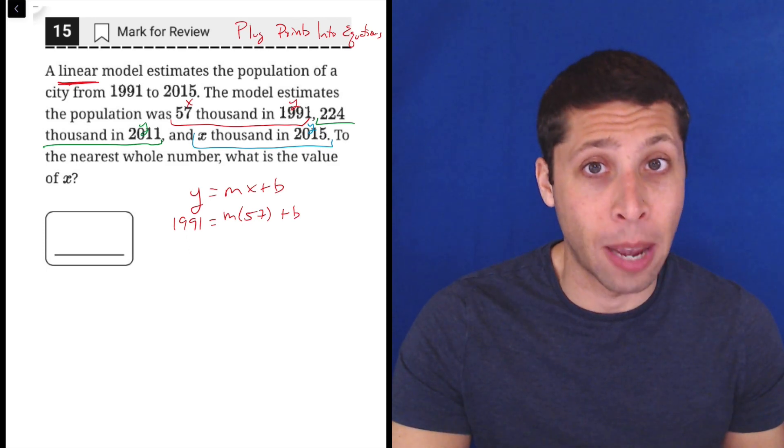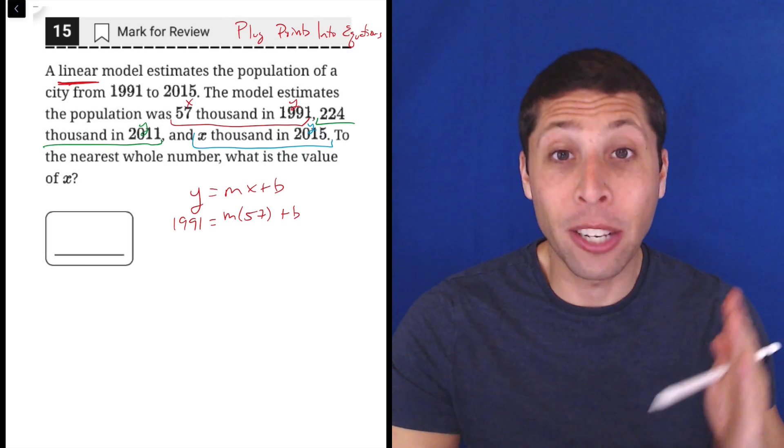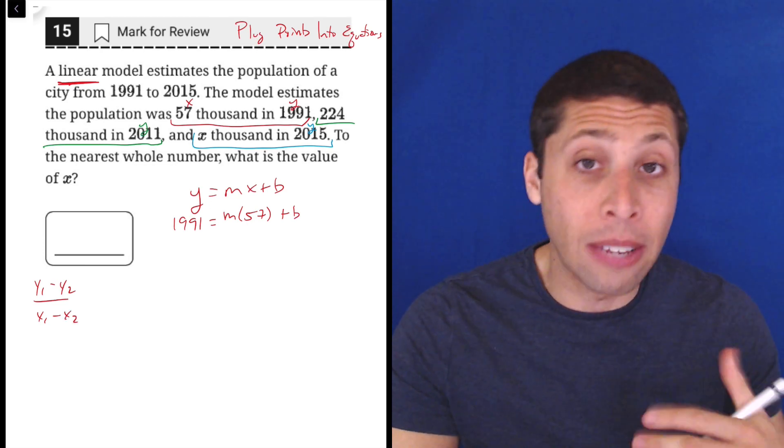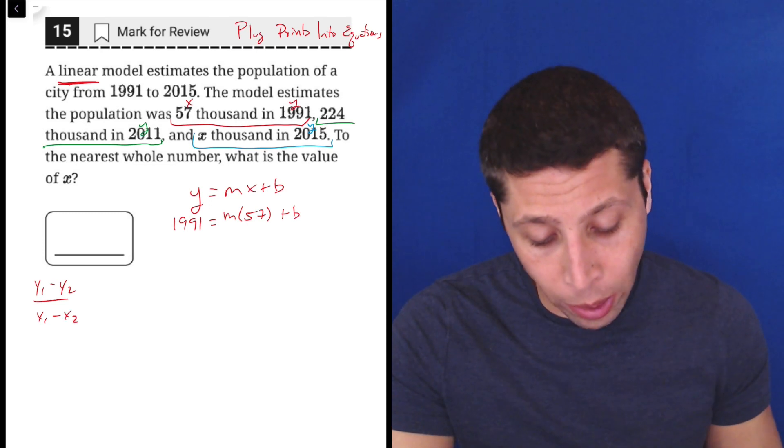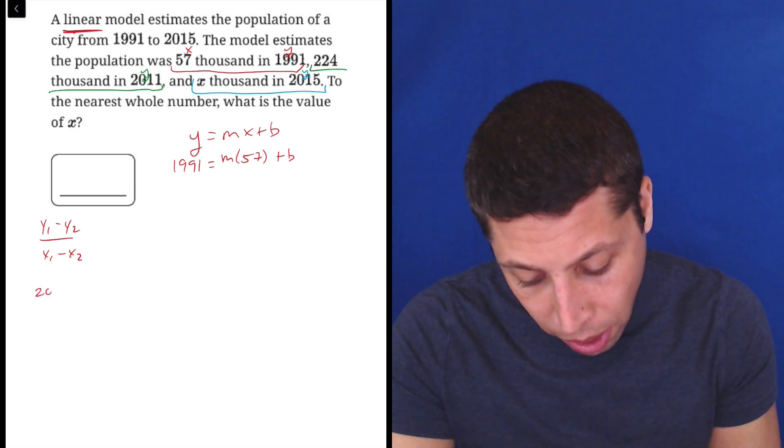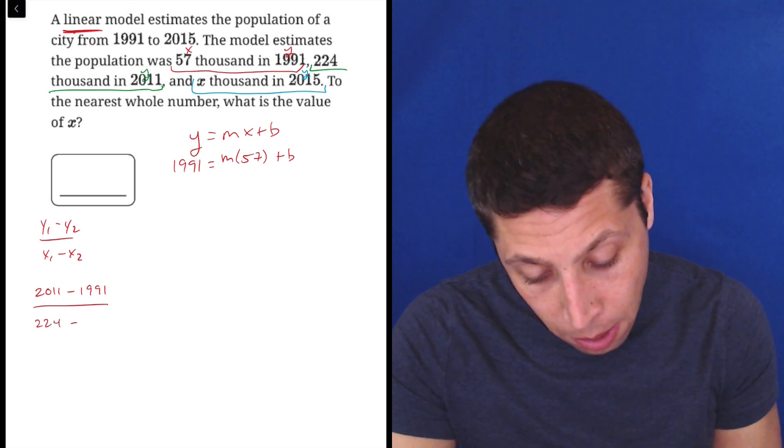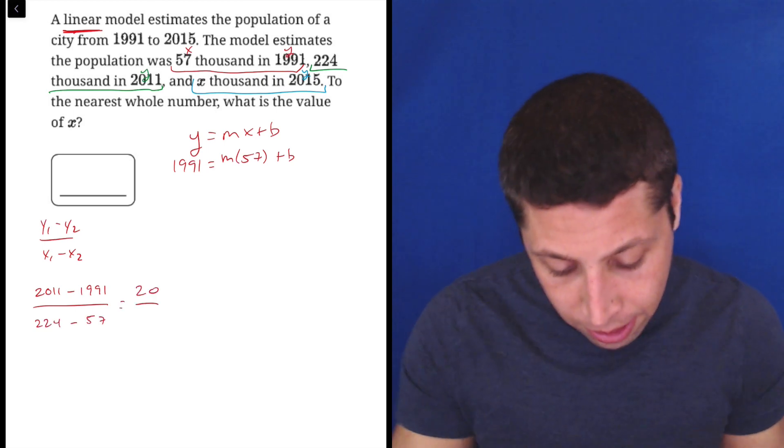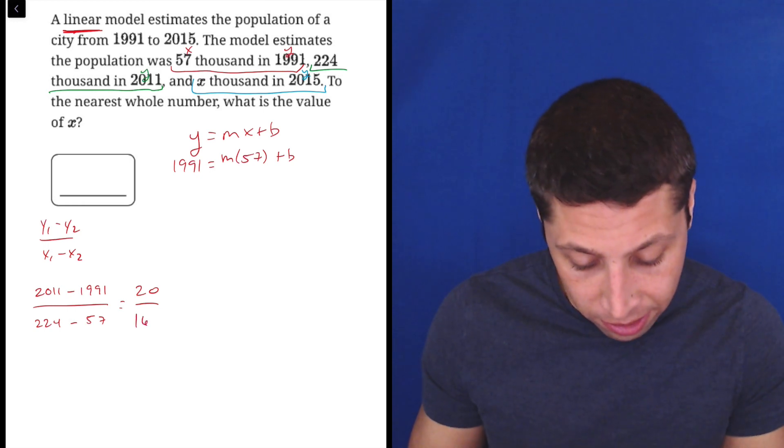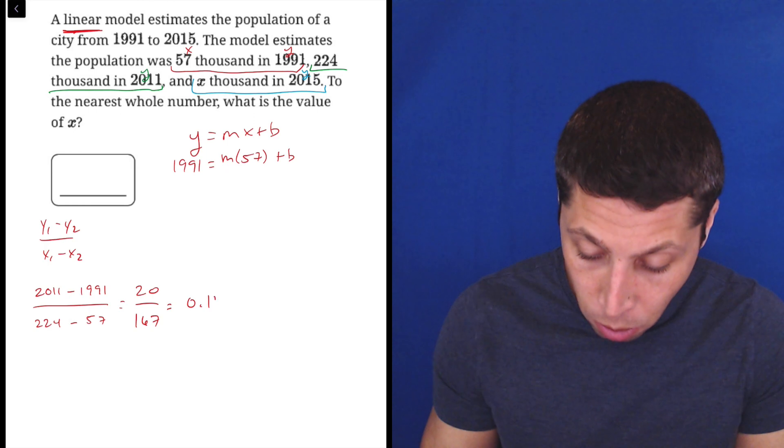So if I don't know the b, the y-intercept, I don't know what's happening at year zero, or when this population is zero, I don't know when that is, but I do know how to find the slope because y1 minus y2 over x1 minus x2 gives me the slope when I have two points and they gave me two points to start. So I could just plug in very mindlessly what I was given. So let's do the green and the red. So 2011 minus 1991, those are my two y-coordinates, and then 224 minus 57. So that's 20 on the top and 224 minus 57, regular old calculator is 167.